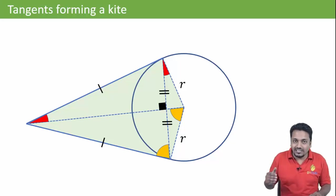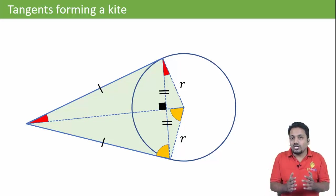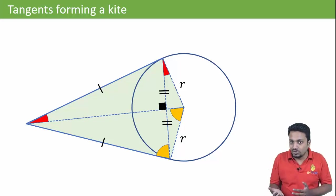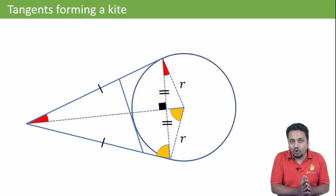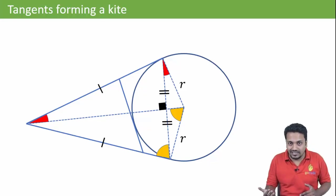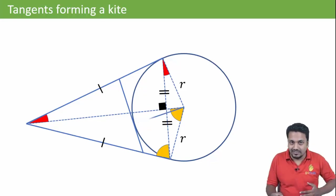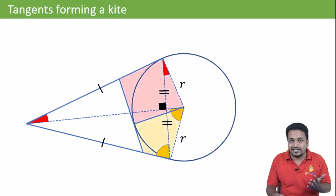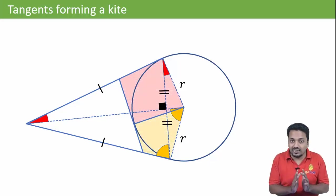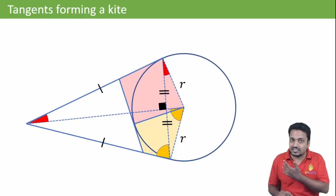I have given the reason in the description. Now if I draw a third tangent to this circle and join its point of contact with the center of the circle, then the two figures formed are also kites. This point is important — there are in total three kites that we have seen in this diagram.